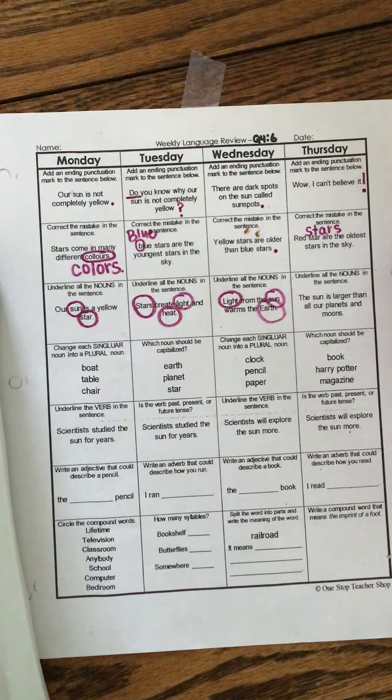Underline the verb in the sentence. Scientists studied the sun for years. Now remember a verb is an action word. So what did they do? The scientists did what? They studied. Good. Is the verb past, present, or future tense? Scientists studied the sun for years. So we already know that this is the word that we're going to be looking at. Right? So look at the ending. There's a D. So sometimes that automatically tells you that it's already happened. But let's talk about the word study. I'm going to study. I will study. I am studying. I studied already. So it's going to be a past tense because it's already happened.